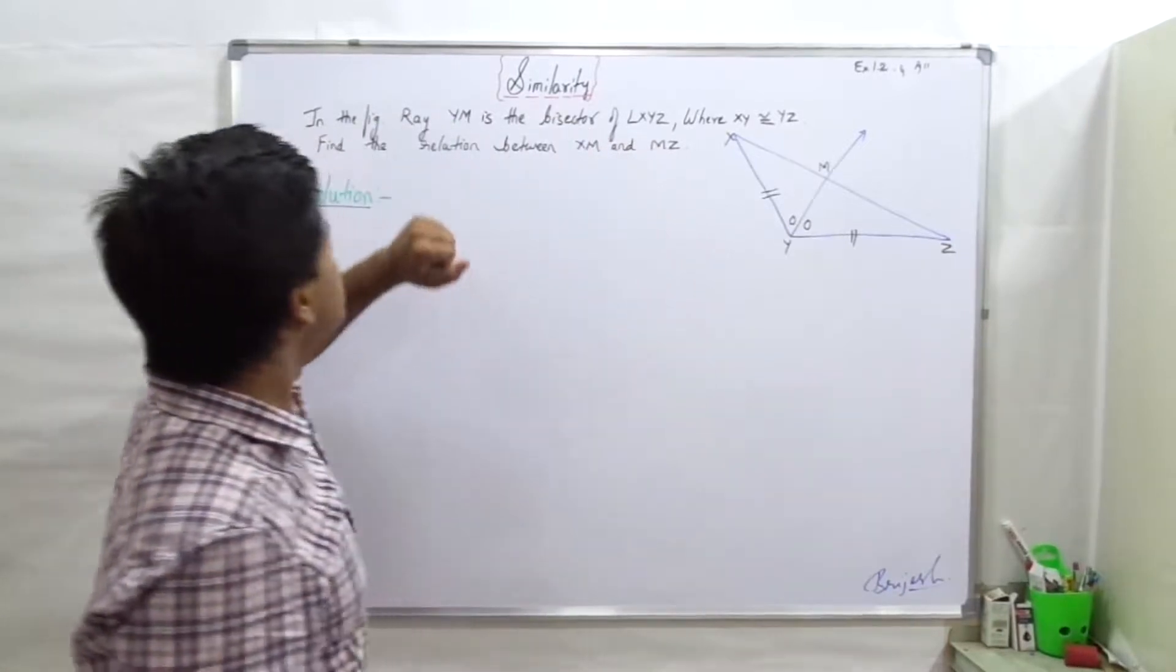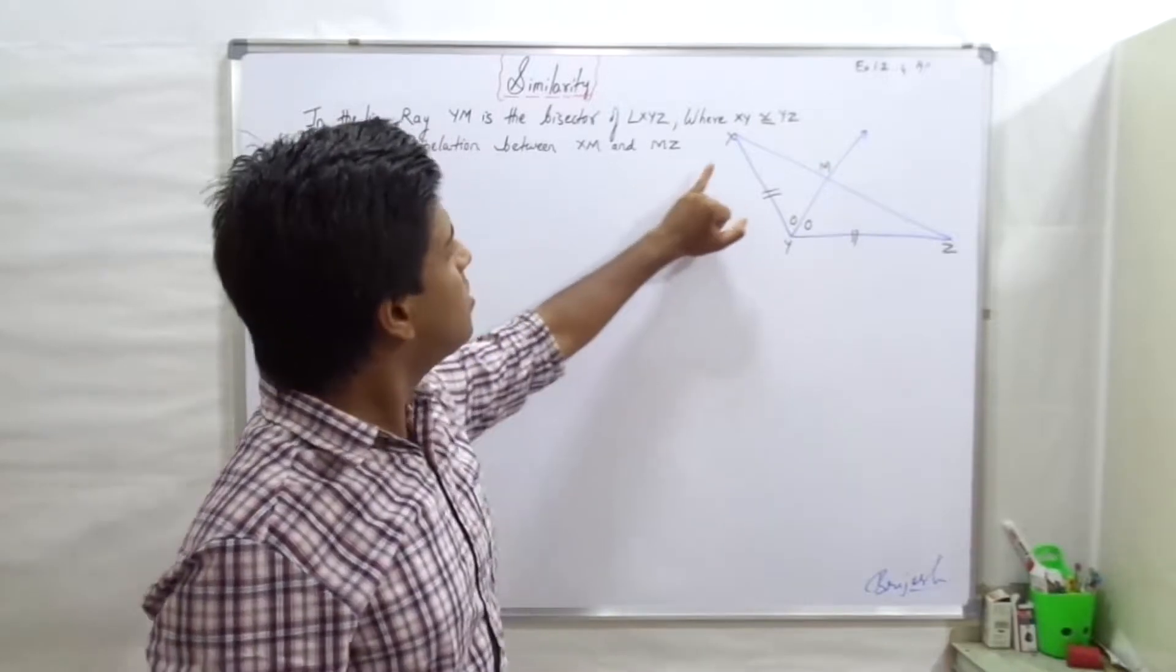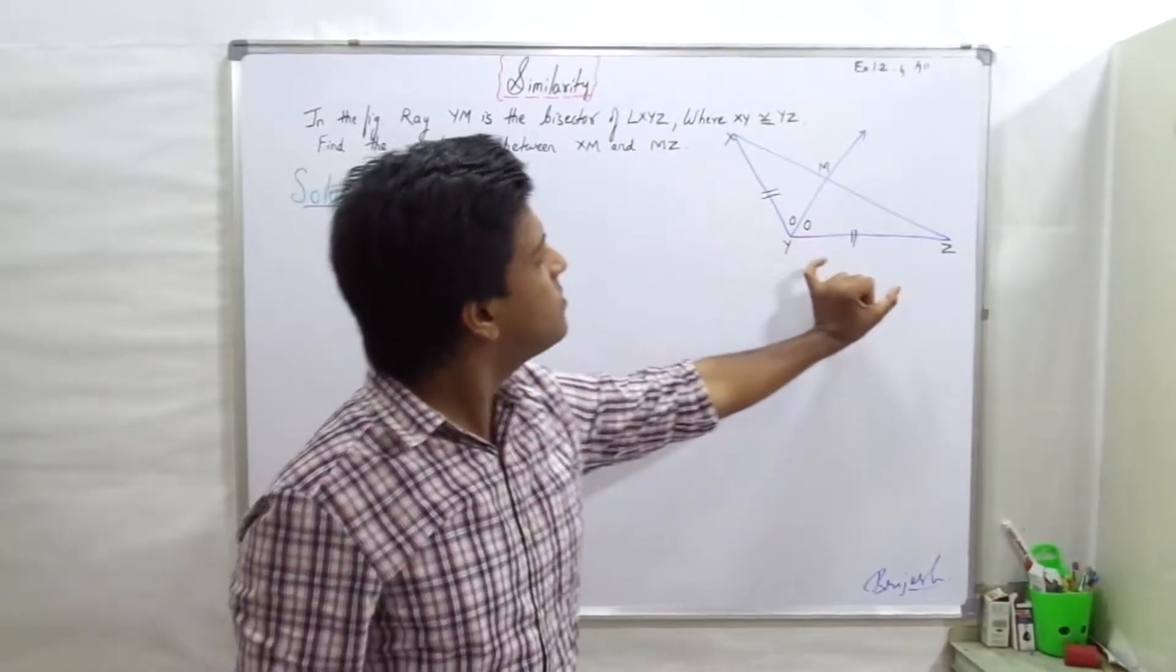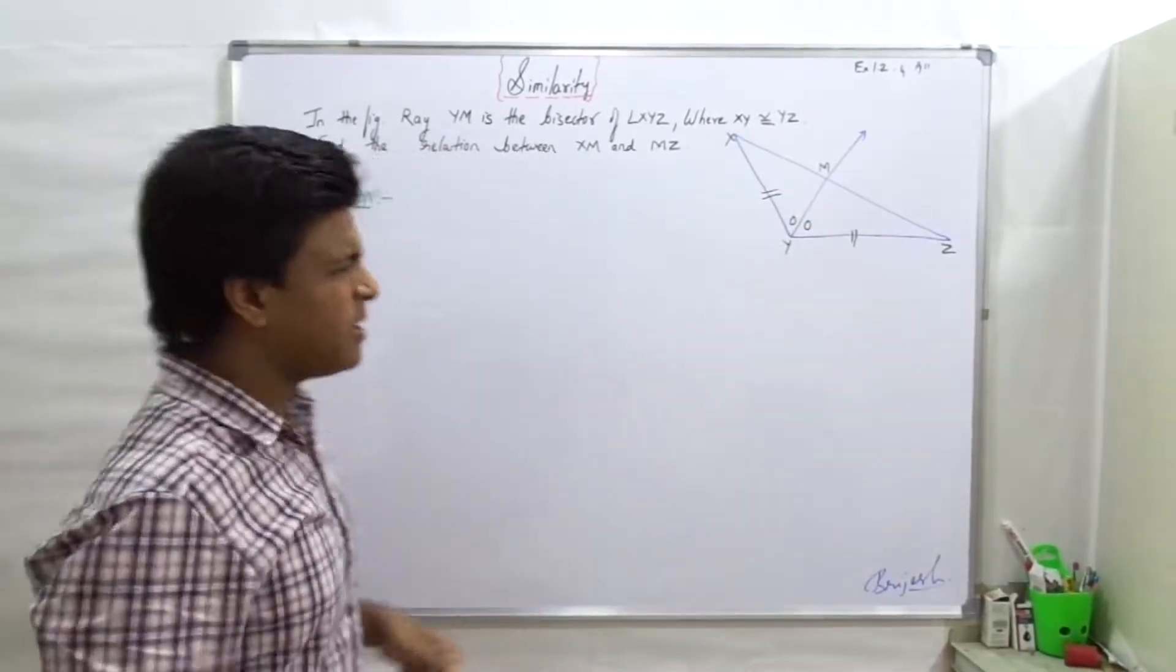In this sum, we have been given that ray YM is the bisector and XY is equal to YZ. Find the relation between XM and MZ. It is very simple.